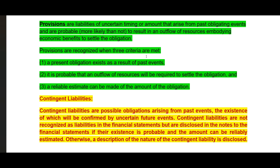Then we can go back to the question so that we will have better understanding of how to answer these types of questions. First of all, we should know what are provisions, then what are contingent liabilities. Provisions are liabilities of uncertain timing or amount that arise from past obligating events and are probable. When you say provision, we have to make an adjustment to the financial statements, so the probability should be certain — more likely than not — to result in an outflow of resources embodying economic benefits to settle the obligation.